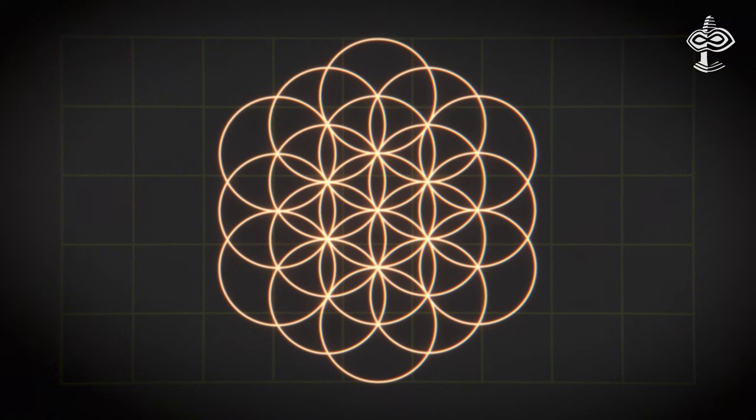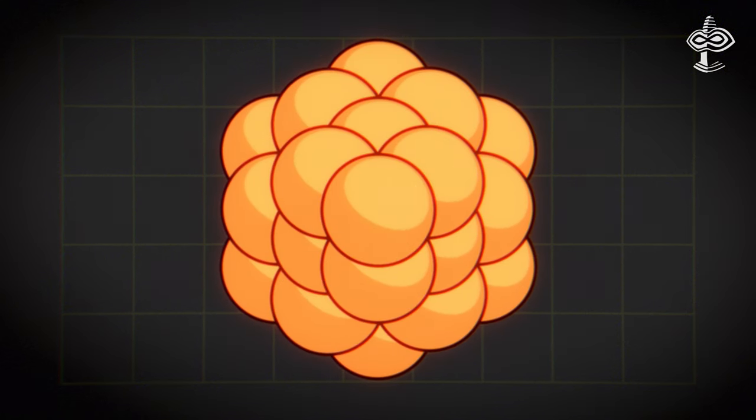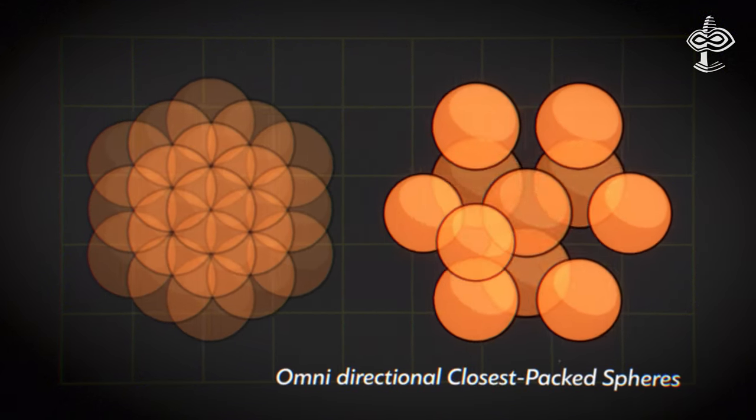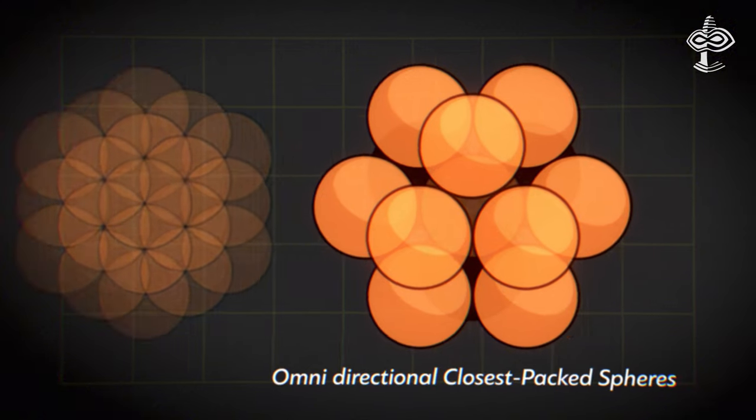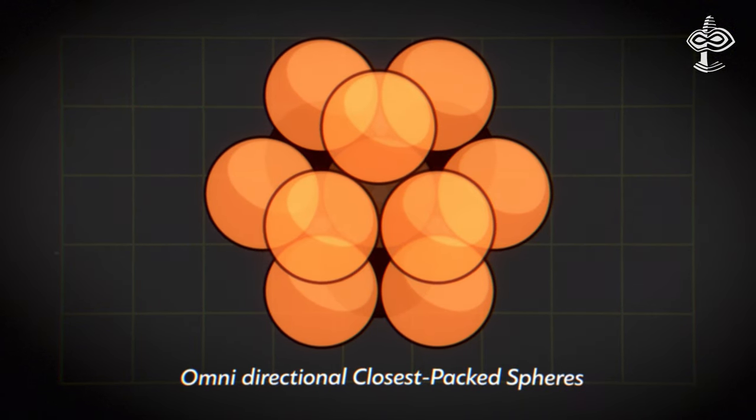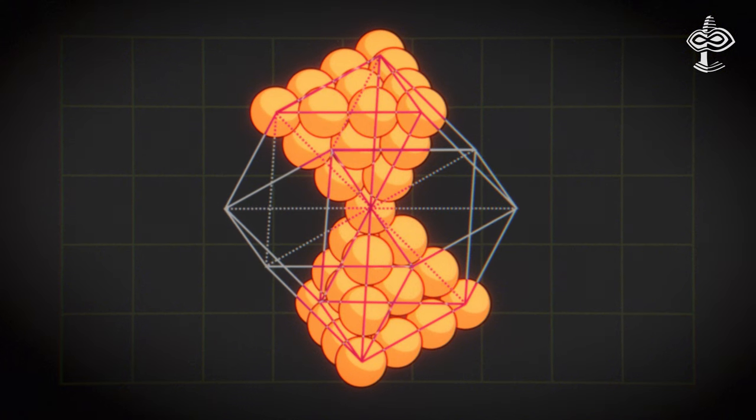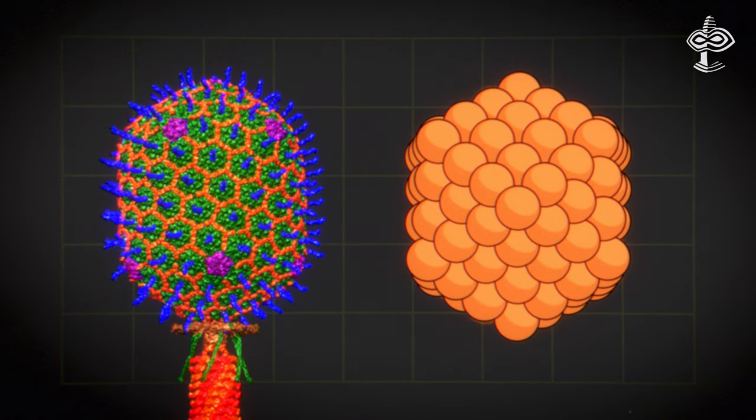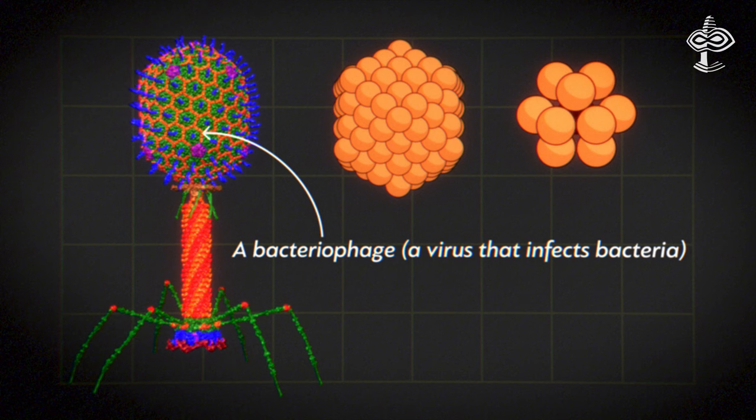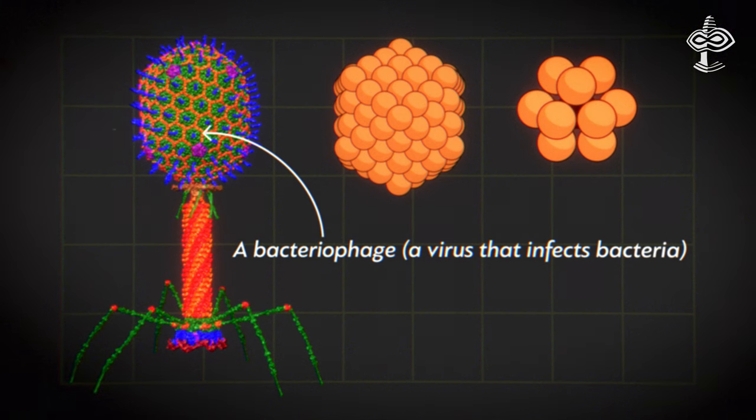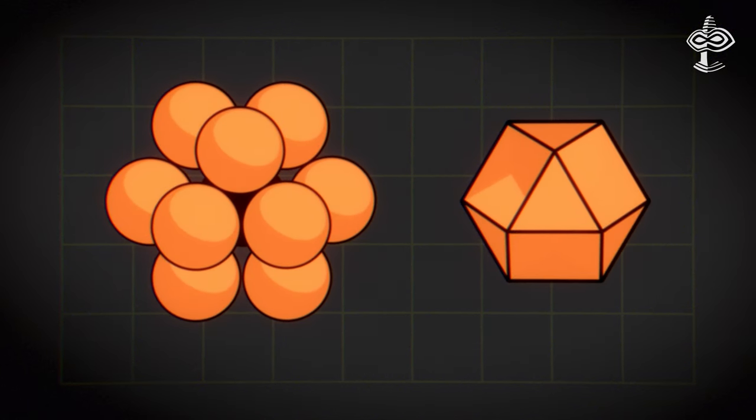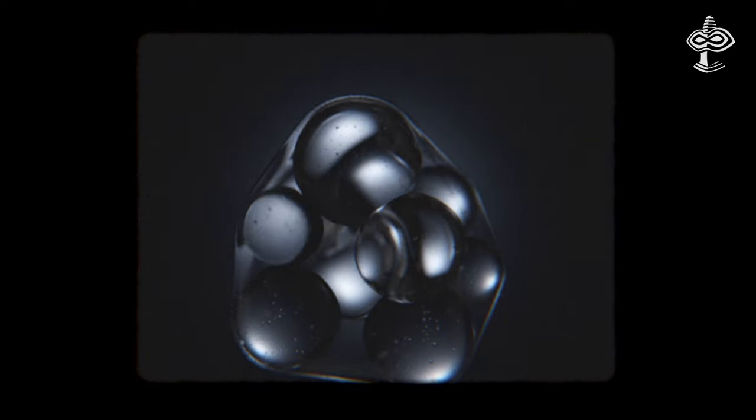Envisioning this pattern not as a flat image but as a three-dimensional structure, it reminds of the close packing of equal spheres, a process linked to fundamental questions about space organization and energy distribution, including in living systems. A mathematical principle asserts that this arrangement achieves the densest packing possible in three-dimensional space, embodying the concept of doing more with less in nature.